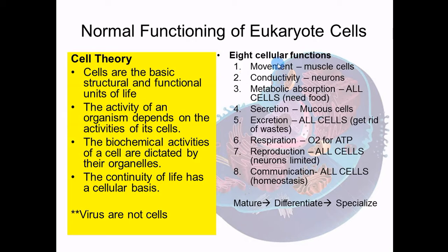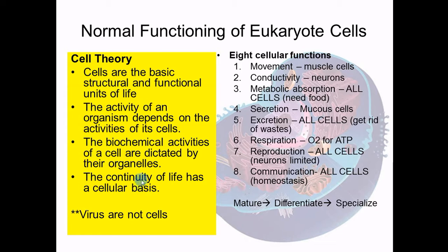When you look at the eight functions, all cells must have these capabilities with a few exceptions. Originally as a stem cell, it has to do all eight things. As it matures and differentiates, it specializes and doesn't have to do everything. For instance, when a neuron specializes, it doesn't have to reproduce anymore. Muscle cells are full of actin and myosin for contraction. All cells must excrete waste, metabolize and generate energy, and secrete things. Almost all cells have an endocrine-like function, and all cells must communicate to let the body know what's going on.